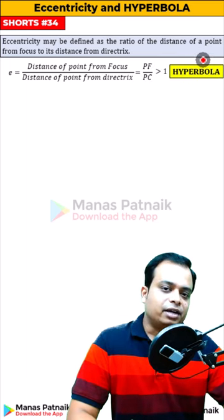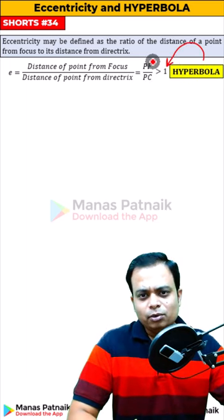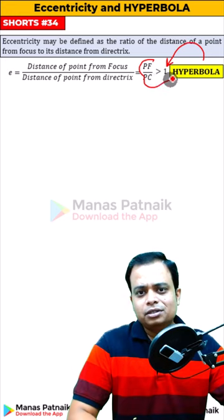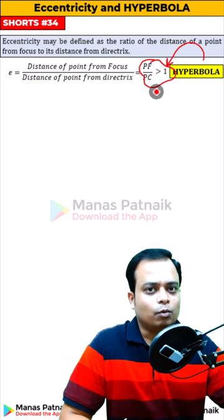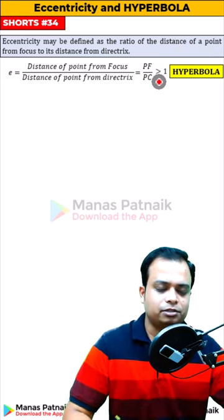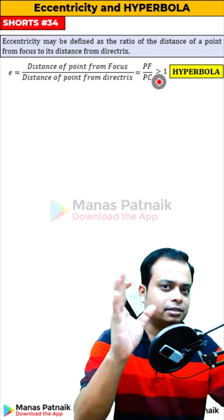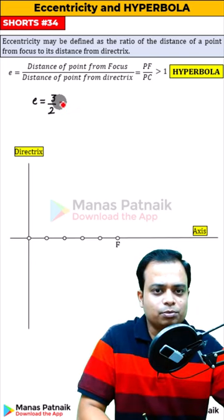What is the connection between a hyperbola and the corresponding eccentricity? We only know that eccentricity is a constant and is greater than 1. For example, let's take the eccentricity as 3 by 2. 3 by 2 is numerically equal to 1.5.